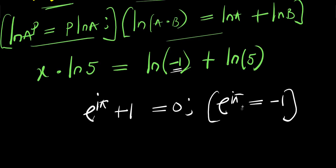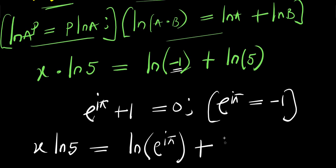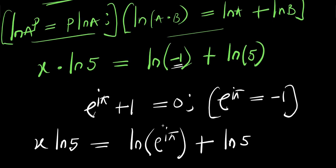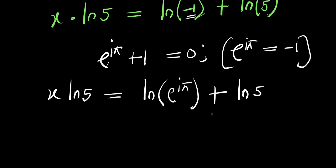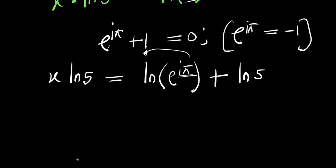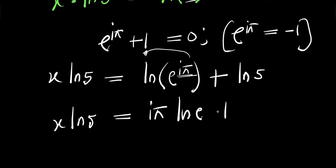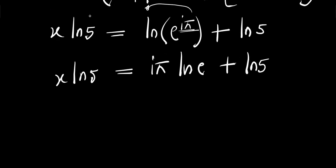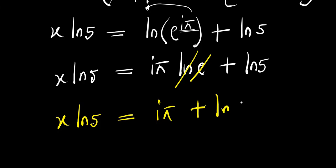So, we replace negative 1 with e power i times pi. So, I have x times natural log of 5 equals natural log of e power i times pi plus natural log of 5. Now, remember that the exponent i pi comes down in front. Applying the log power rule, we have x times natural log of 5 equals i pi times natural log of e plus natural log of 5. Since natural log of e equals 1, we have x times natural log of 5 equals i times pi plus natural log of 5.